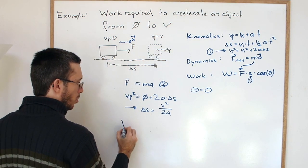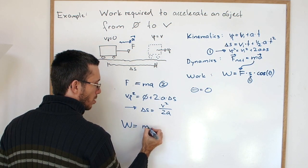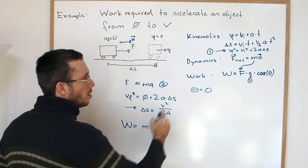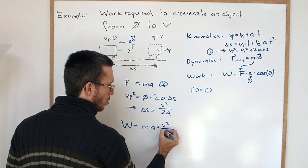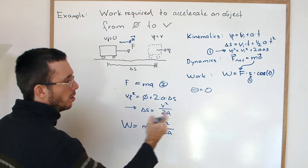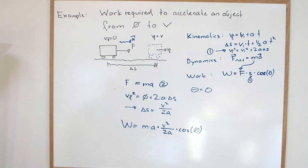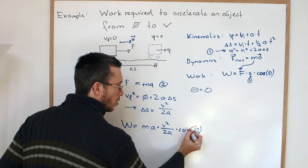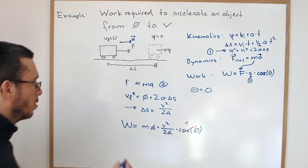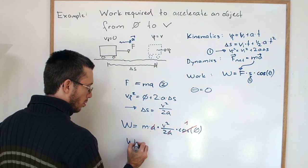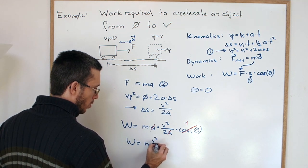So let's combine. And work is the force, so mass times acceleration, times displacement, so times v squared over 2a, and then times cosine of zero. Now cosine of zero is one. The acceleration goes away. And when I rewrite it, I get mv squared over 2.